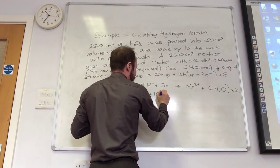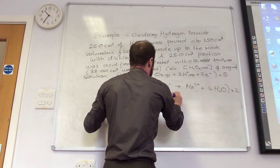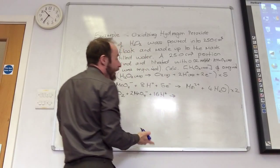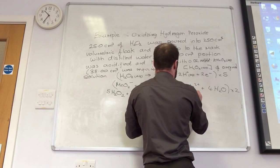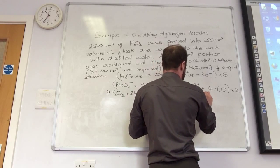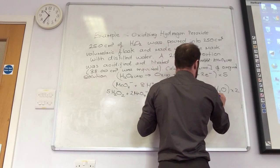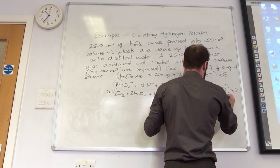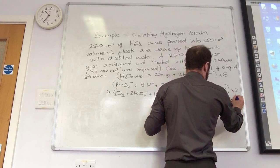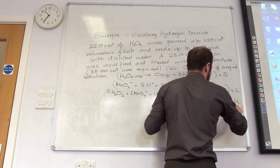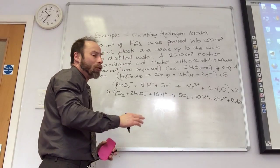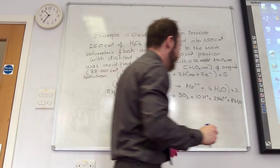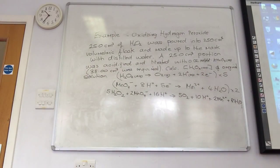So overall, I'm going to have 2MnO4 minus plus 16H+ goes to 5O2 plus 10H+ plus 2Mn2+ plus 8 H2O. And you're right, I can actually cancel some of those H pluses out, can't I?